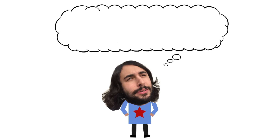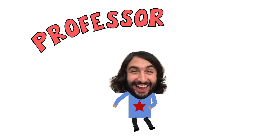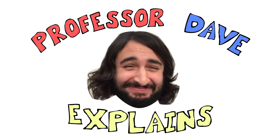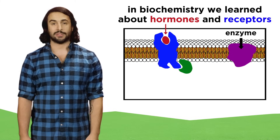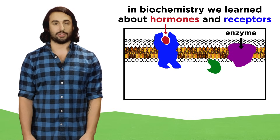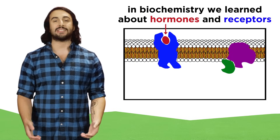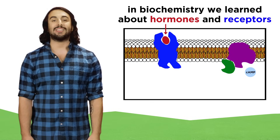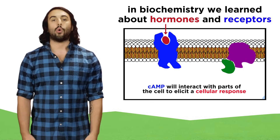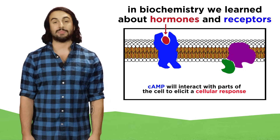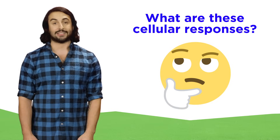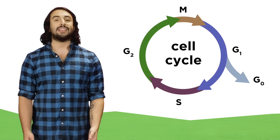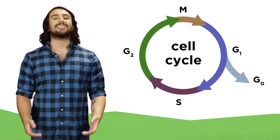Professor Dave here, let's talk about the cell cycle. In biochemistry, we learned about how small molecules, like hormones, can act as messengers, interacting with receptors in the plasma membrane or within the cell, that then amplify the signal or activate and carry out some cellular function. But we didn't learn much about what these functions are exactly. As it happens, many of these signals regulate the cell cycle.